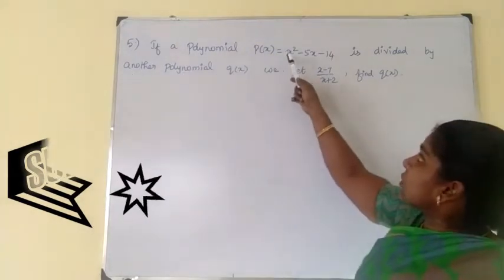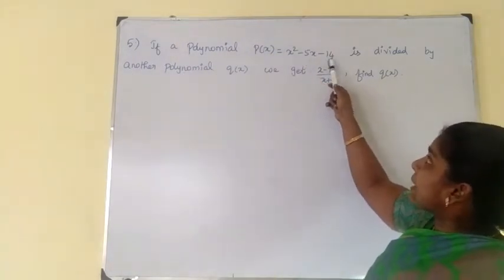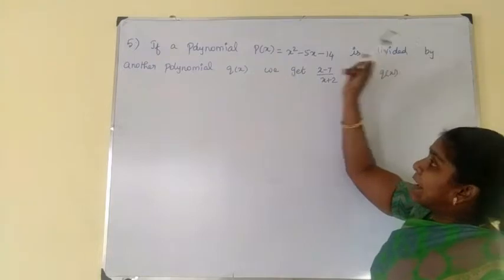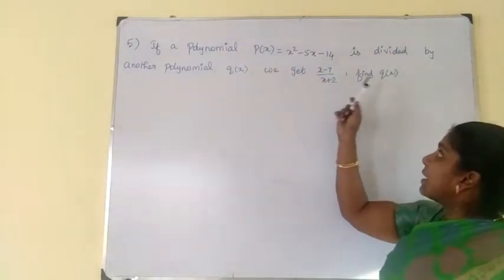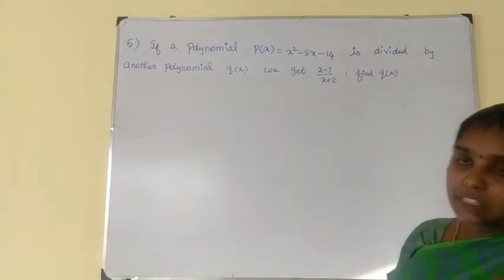If a polynomial P of x is equal to x² minus 5x minus 14 is divided by another polynomial Q of x, we get x minus 7 by x plus 2, find Q of x.